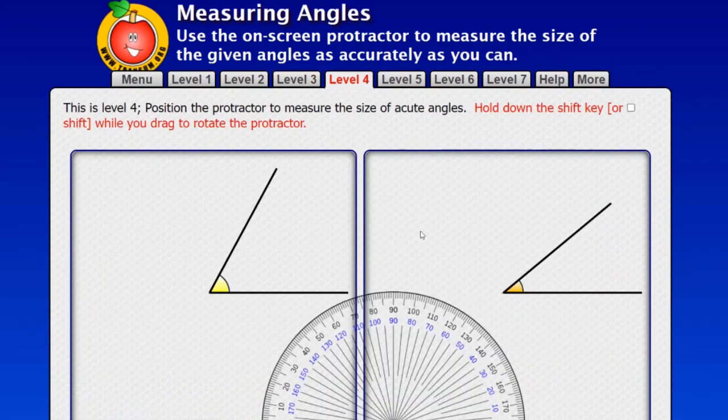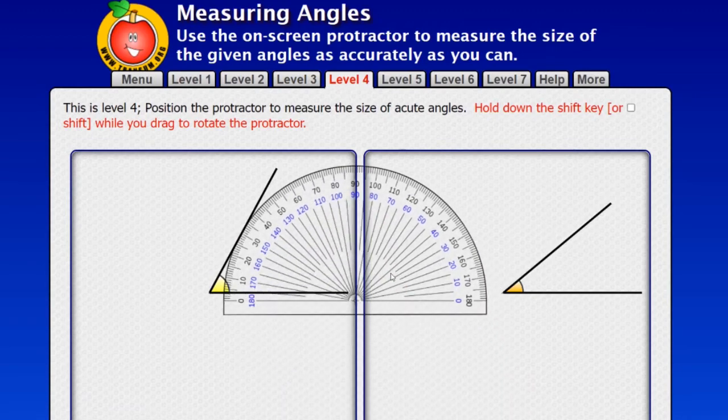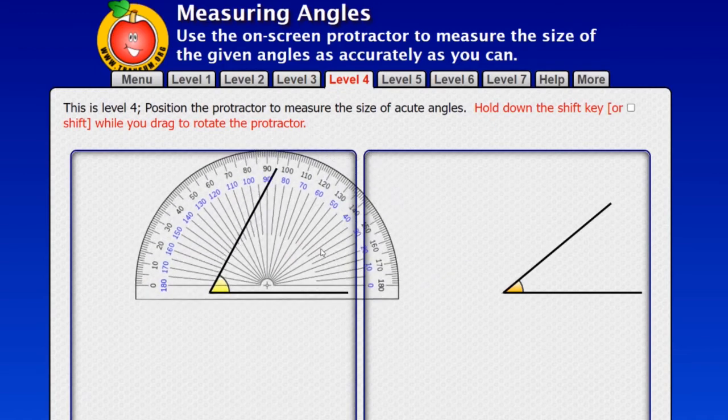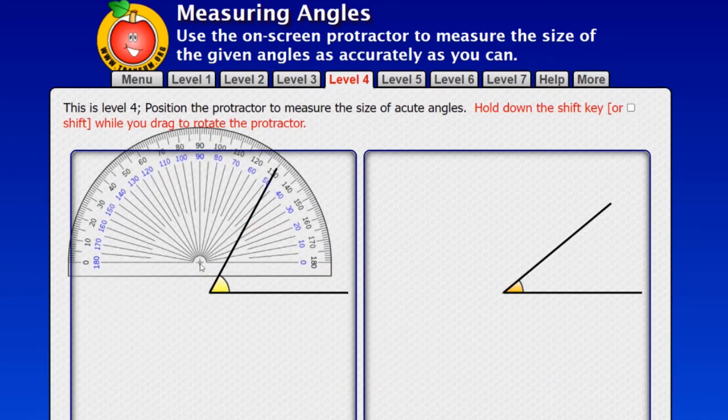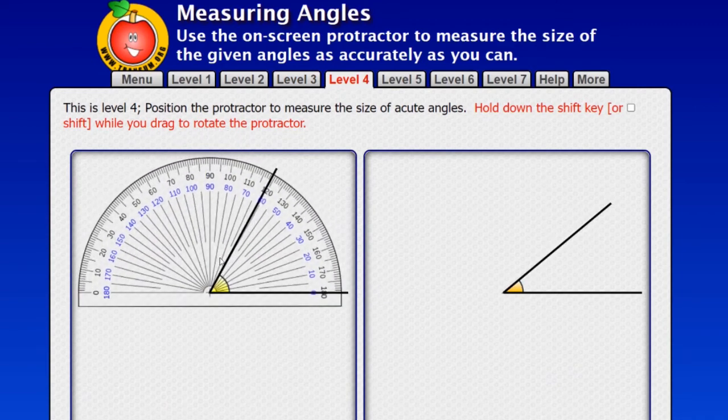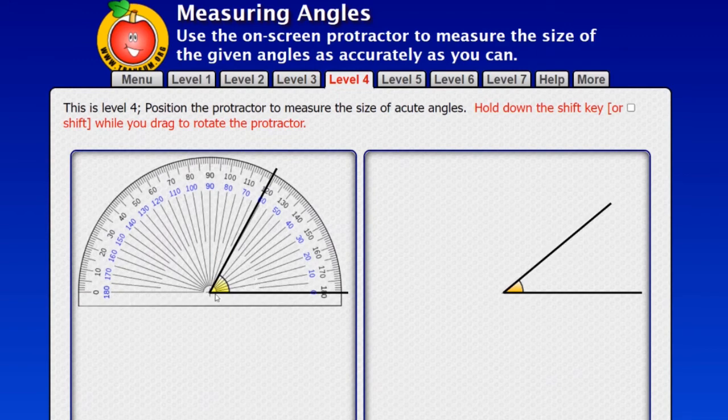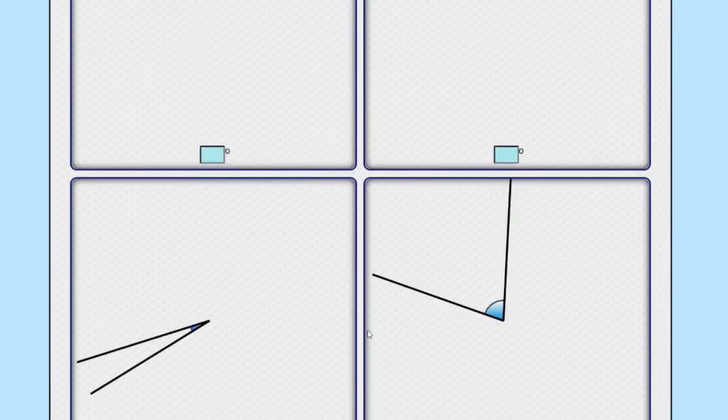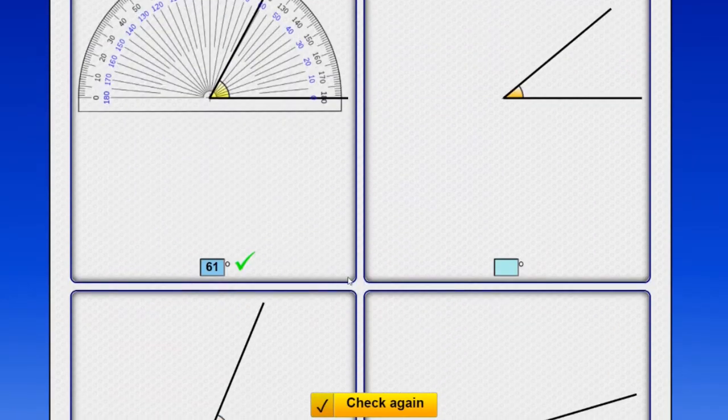Moving on to level 4. Now, this is where you get the practice moving the protractor. You can use your cursor just to drag the protractor. And the first job is to get the target, that's that little bit there in the middle of the protractor over the apex of the angle. And then one of the arms of the angle should be lined up with 0 on one of the scales. So in this case, I've lined it up with the blue 0. And then I can count round on the blue scale and see this angle. It's just over 60. I would say 61. So I'm going to type in 61 degrees. Let's check that using the check button. Yep, we've got that right.